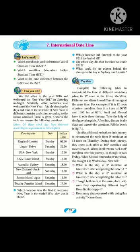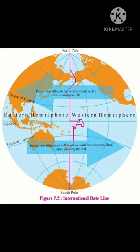The day and date is always ahead by one day in the west of the International Date Line than the day and date running in the east of the International Date Line. Although the IDL, i.e. International Date Line, is drawn with reference to the 180 degree meridian, the International Date Line is not a straight line like the 180 degree meridian.